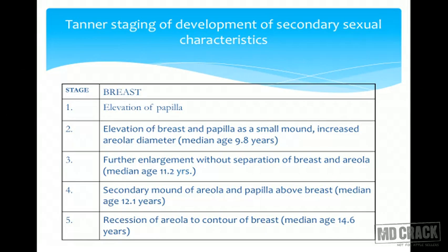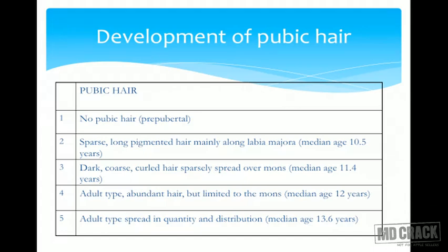Breast development is staged using Tanner staging. Stage 1: elevation of papilla only. Stage 2: elevation of breast and papilla as a small mound with increased areola diameter. Stage 3: enlargement without separation of breast and areola. Stage 4: development of a secondary mound of areola and papilla above the breast. Stage 5: recession of areola to the breast contour — complete development.